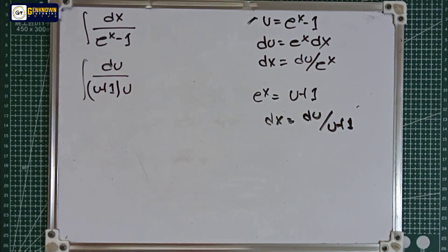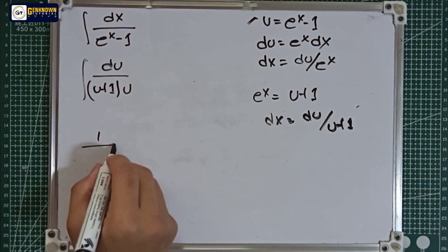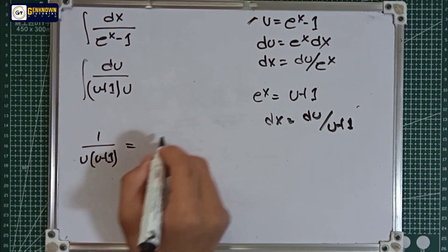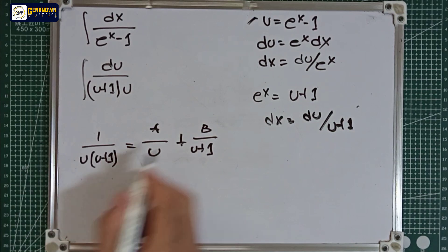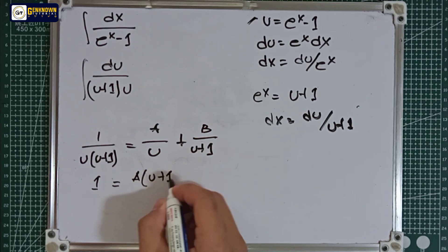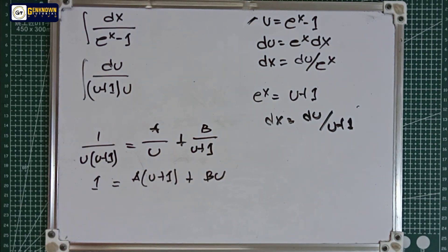Since this is what appeared in our equation, it means we will use partial fractions. So 1 over u multiplied by u plus 1 is equal to a over u plus b over u plus 1. This will become 1 is equal to a multiplied by u plus 1 plus bu. So 1 is equal to au plus bu plus a, distributing the a. So 1 is equal to a and 0 is equal to a plus b multiplied by u.